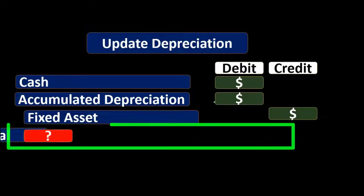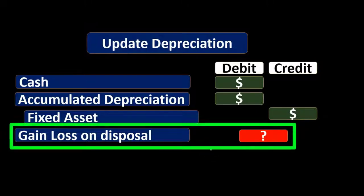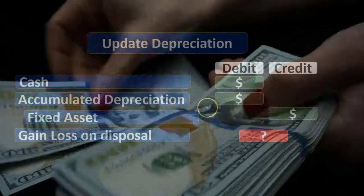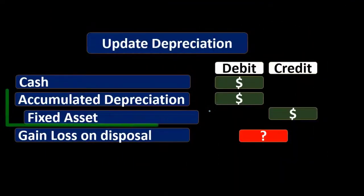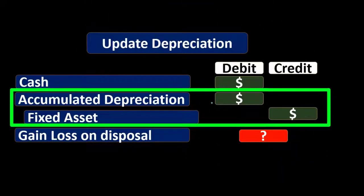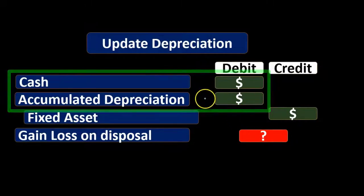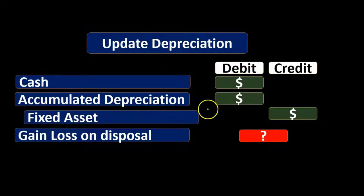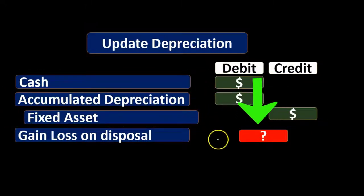Then we're going to have a debit or credit remaining — a gain or loss — based on this information. If we got more cash than the book value of the property, plant, and equipment — the asset minus the accumulated depreciation — we would have a gain. If we got less cash than the book value, we would have a loss.